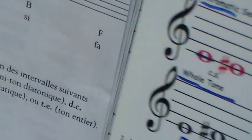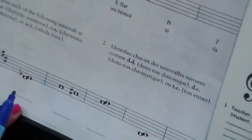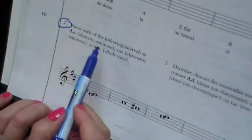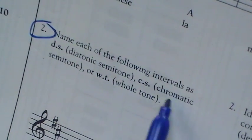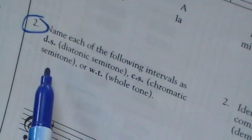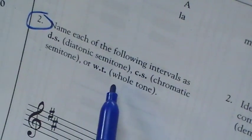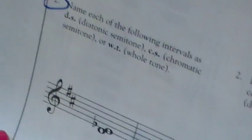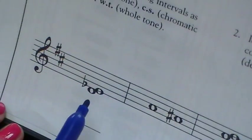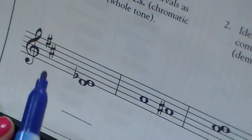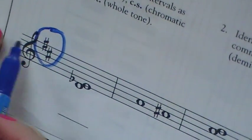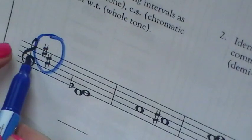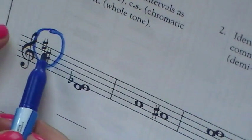So let me show you the type of question you could get asked in an exam. So here is a question. Name each of the following intervals as diatonic with a DS, chromatic with a CS, or WT whole tone. So you're going to look down at the question they want you to answer. Now, the first thing you have to see is that if there is a key signature, and the key signature is always after the clef.